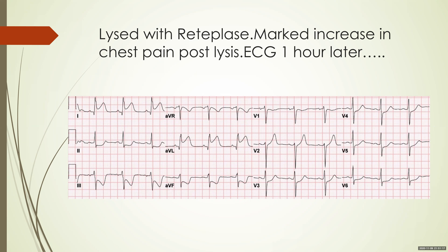This ECG shows ST elevation in leads 1 and aVL with reciprocal changes in leads 2, 3, and aVF. The ST elevations in the inferior leads have completely disappeared and are replaced by ST elevations in the lateral leads — so this is now a lateral wall MI.